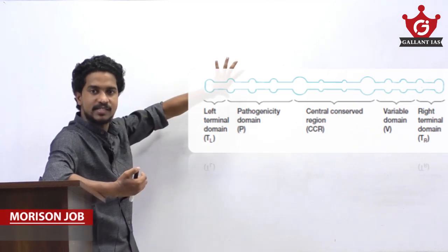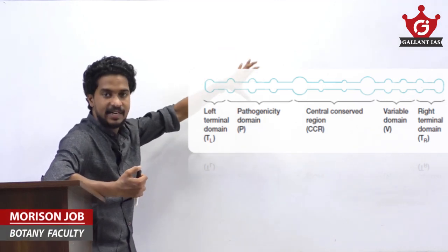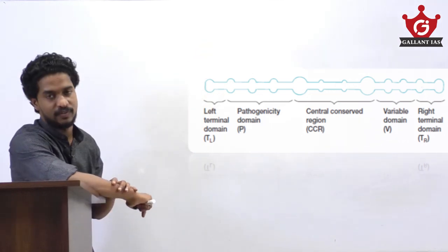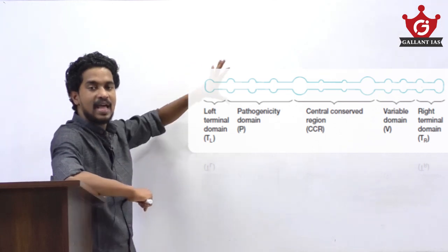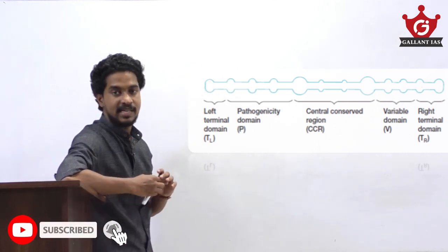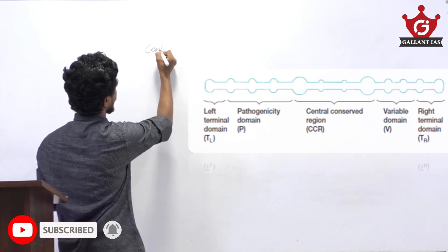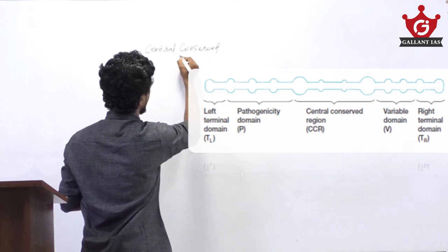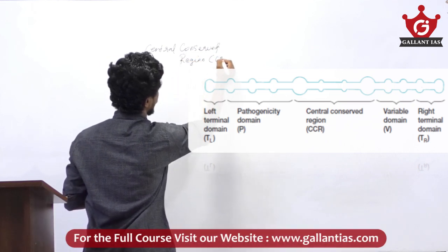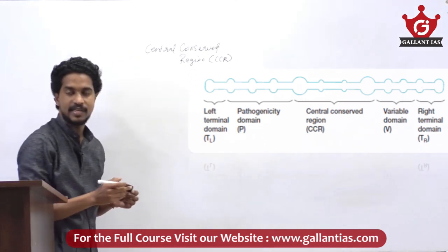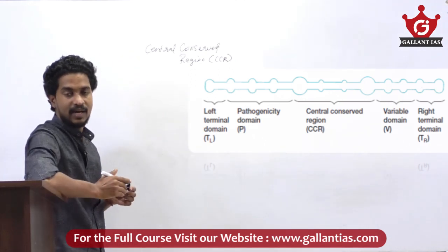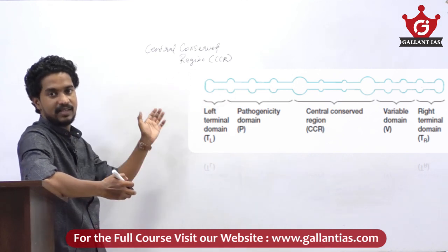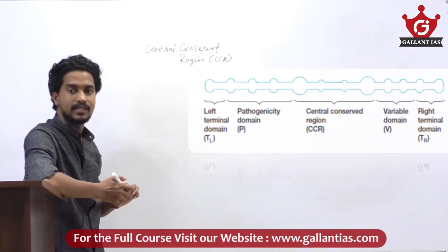Structure of Viriodes. We have discussed what Viriodes are and their diversity, and next we are discussing the structure of Viriodes. Viriodes have a central conserved region, or CCR region. On the left and right sides there are left terminal domain and right terminal domains.